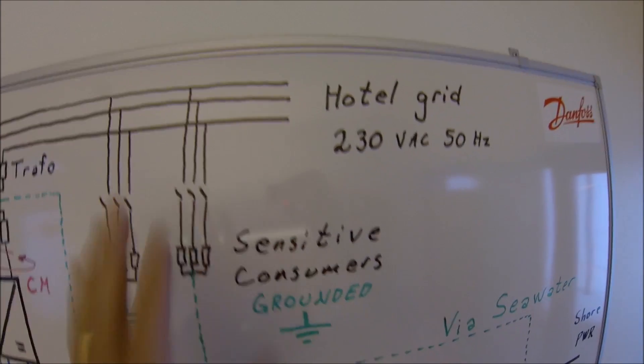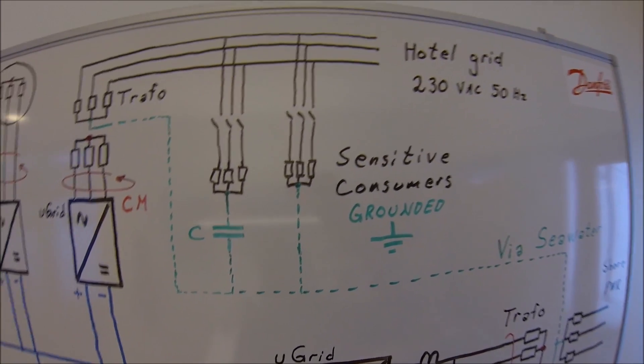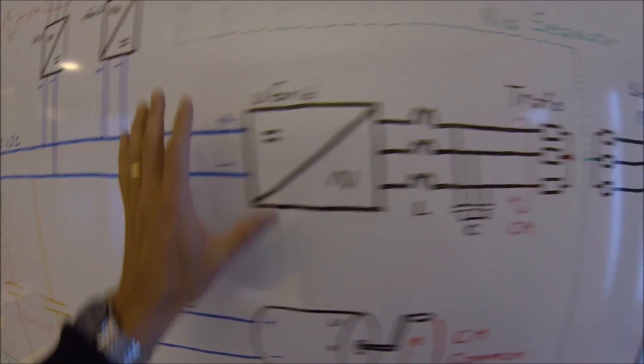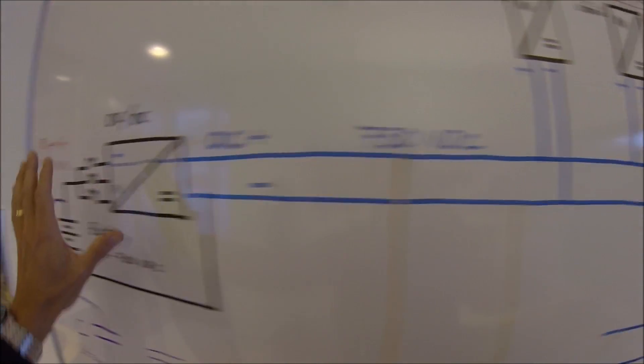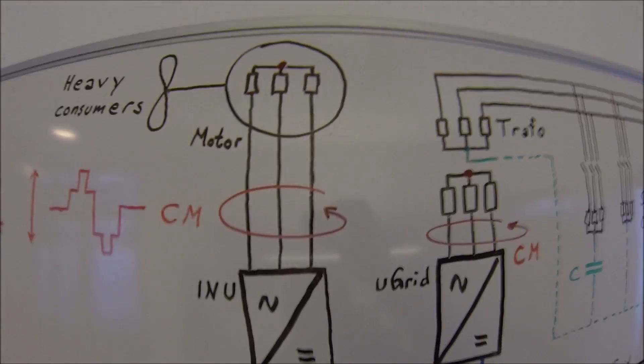Of course, if you look at the consumers and other AC grids on board in the ship, those are clean. However, inside our hybrid battery system, we have a clean DC, dirty AC.